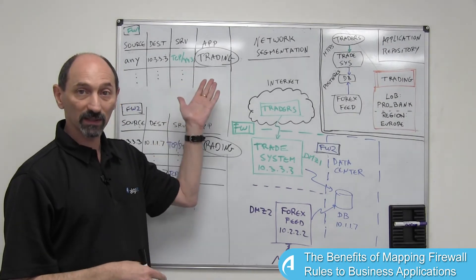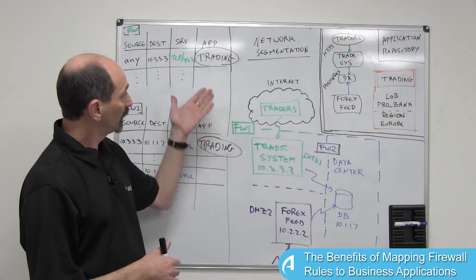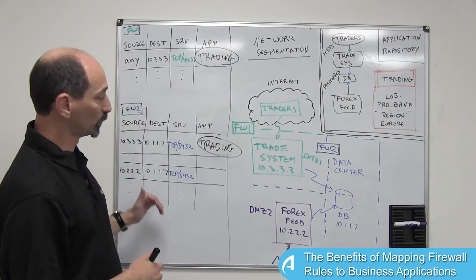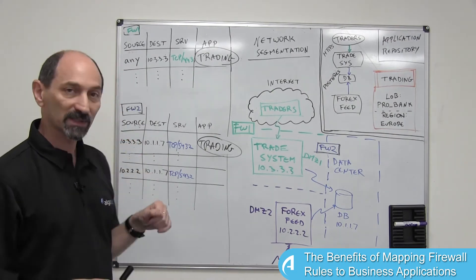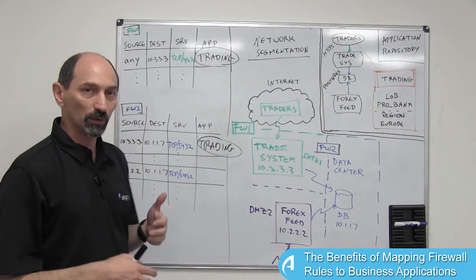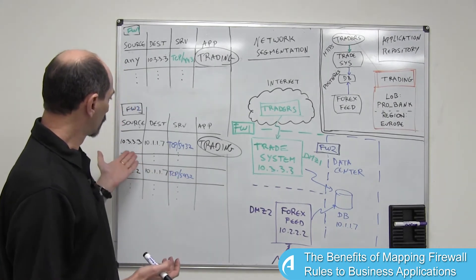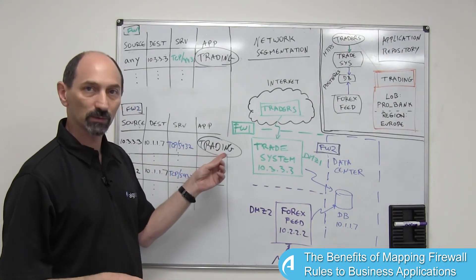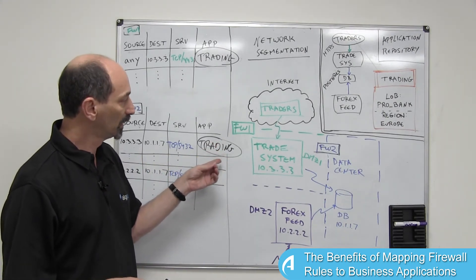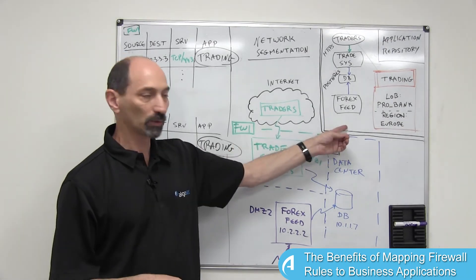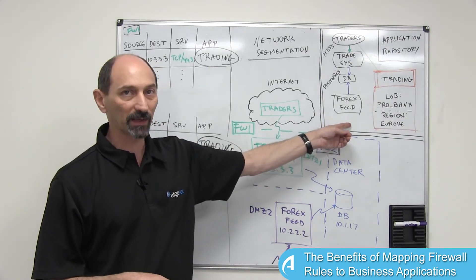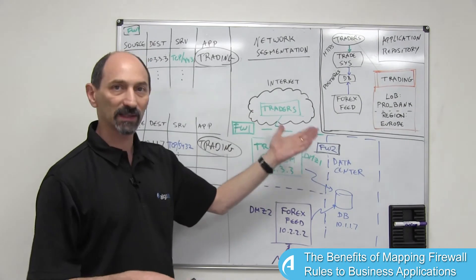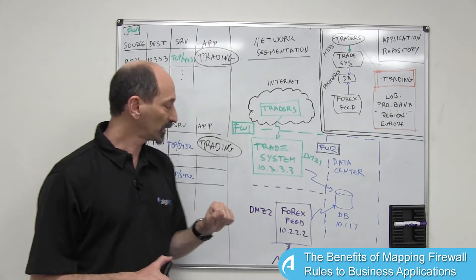And there are such systems that can achieve this annotation for you. If you have these annotations on the rules, then when it comes time to recertify the rule, you're no longer in the dark. You can look at the rule and say, this rule belongs to or supports the trading application. And then you can go talk to the people in charge of the trading application and find out whether the rule is still necessary and what it's for.